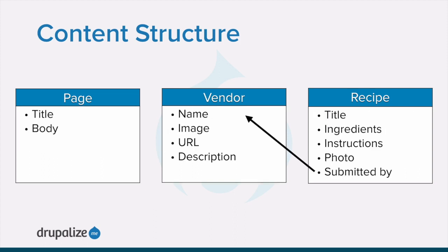For each entity subtype you decided on, decide what fields are needed. For instance, the vendor content type might need fields for the vendor name, web page URL, image, and description.